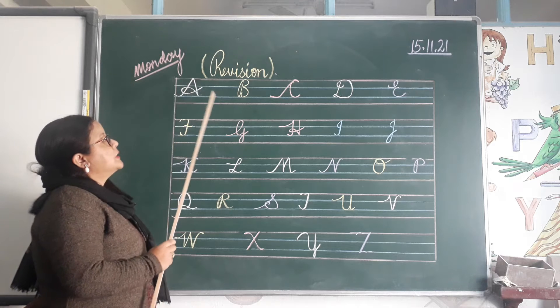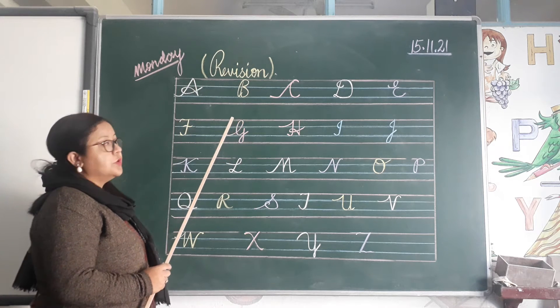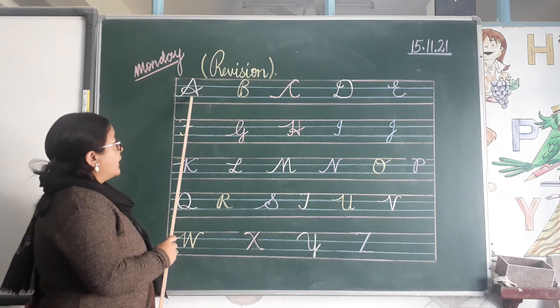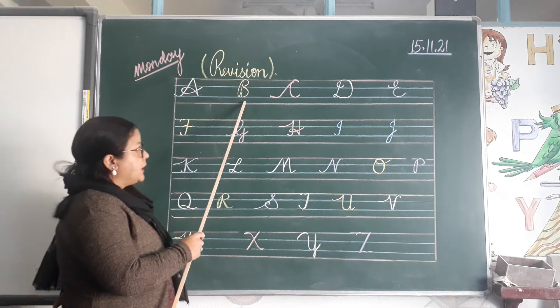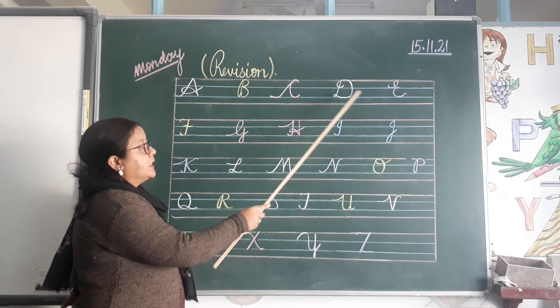This is cursive capital letters, okay? So, let's read it out together. A, B, C, D, E.